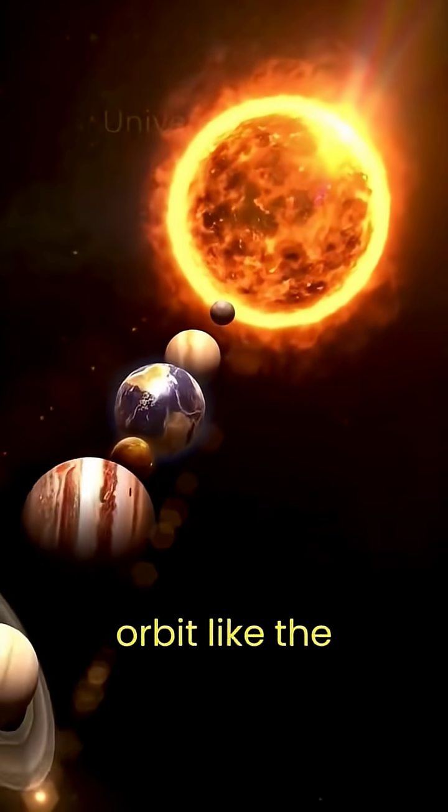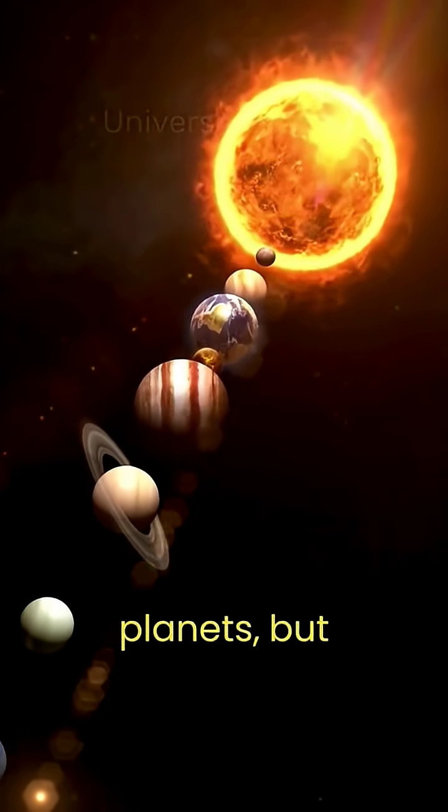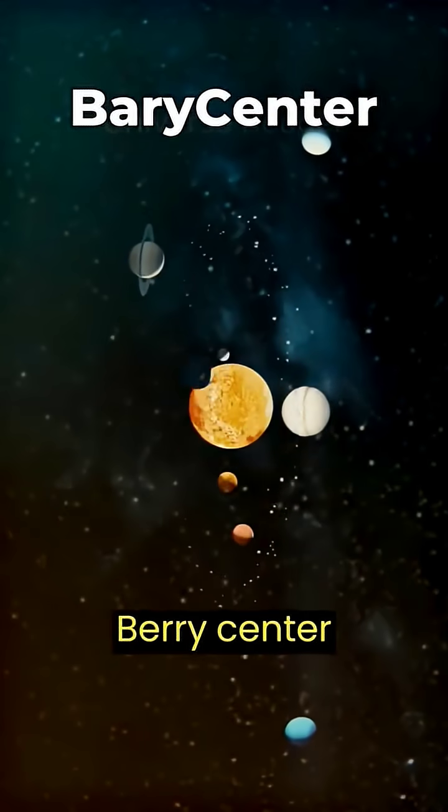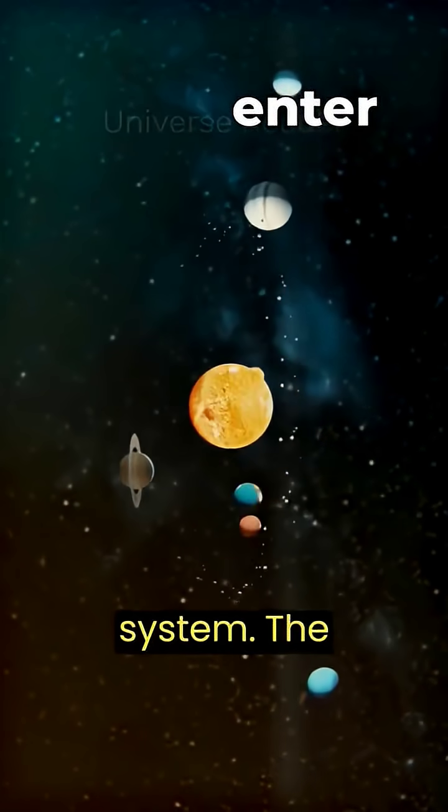It doesn't follow a traditional orbit like the smaller planets, but instead revolves around a point located outside the Sun, which is known as the barycenter or the center of mass of the Jupiter-Sun system.